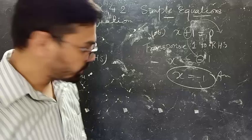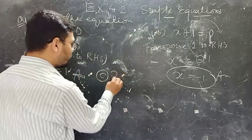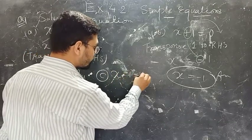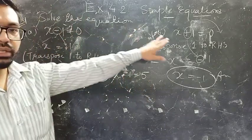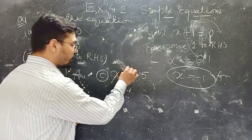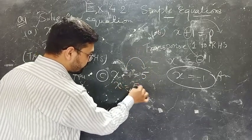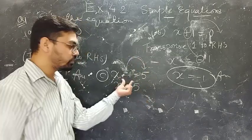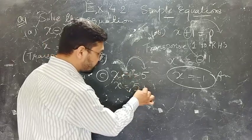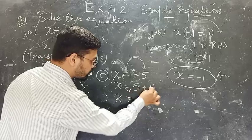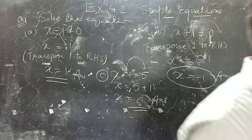Let me take one more example — part C. x minus 1 equals 5. Here you have 5 on the RHS. First take this 1 to the RHS. When you move this 1 from LHS to RHS, the sign gets changed. Here it is negative, so it becomes positive. So x equals 5 plus 1, which is 6. This is your answer.